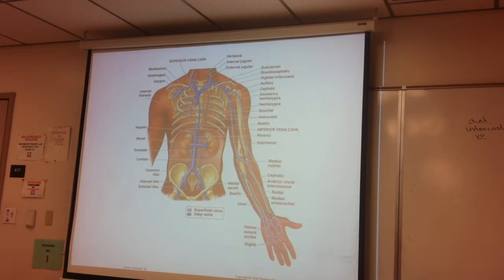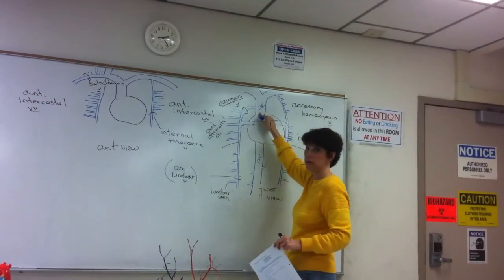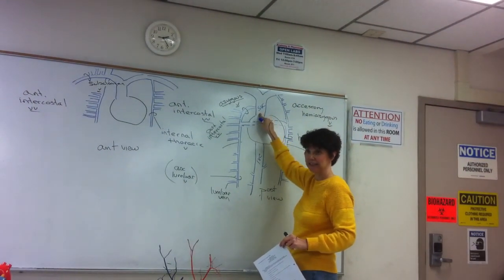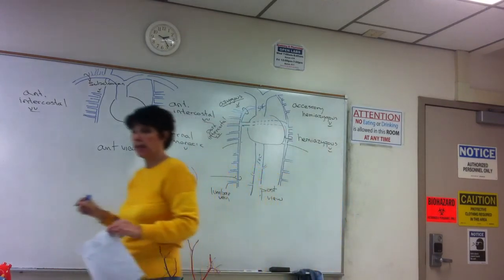If I were to say trace a drop of blood from the left posterior chest wall to the heart, then you would go: posterior intercostal vein to the hemiazygos vein, to the azygos vein, to the superior vena cava.